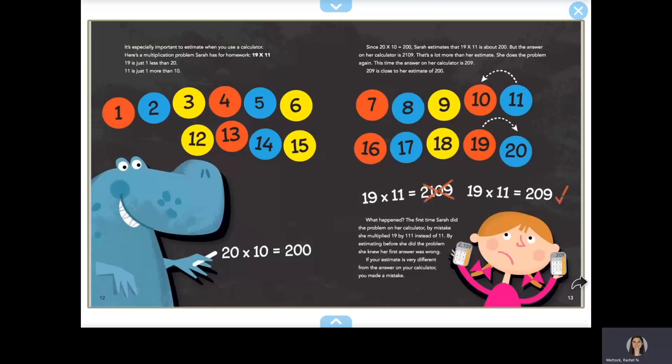What happened? The first time Sarah did the problem on her calculator, by mistake, she multiplied 19 by 111 instead of 11. By estimating before she did the problem, she knew her first answer was wrong. If your estimate is very different from the answer on your calculator, you made a mistake.